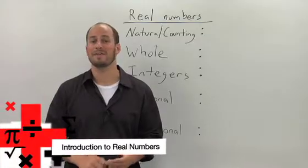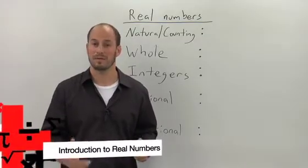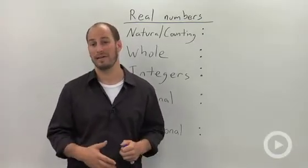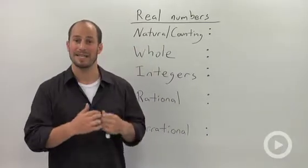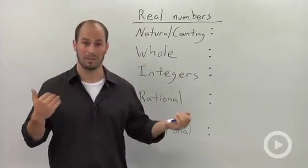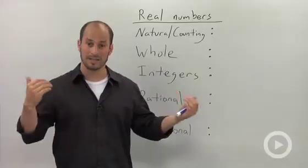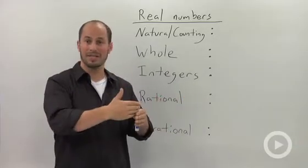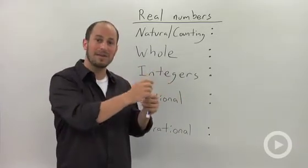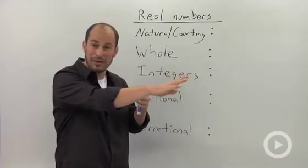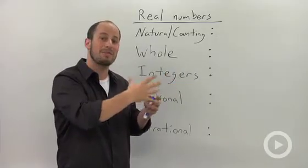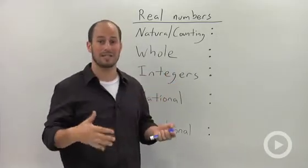What we're going to talk about now is different classifications of numbers. More specifically, we're going to talk about real numbers, which are basically any number that can be written on your number line. Your number line is a spectrum of numbers - you have numbers like 0, 1 on there, but you also have many different numbers in between. We're going to talk about the different breakdown of all the classifications of those numbers.